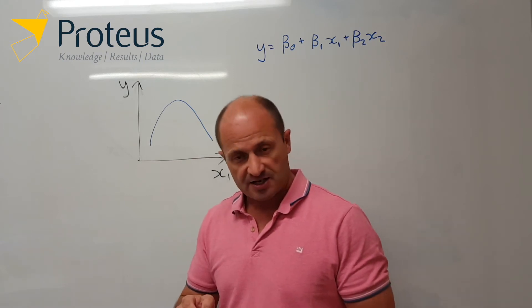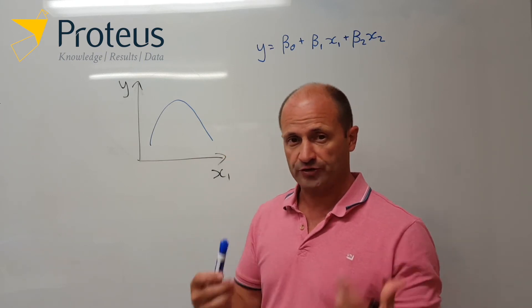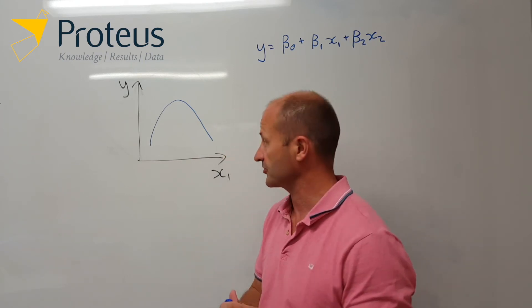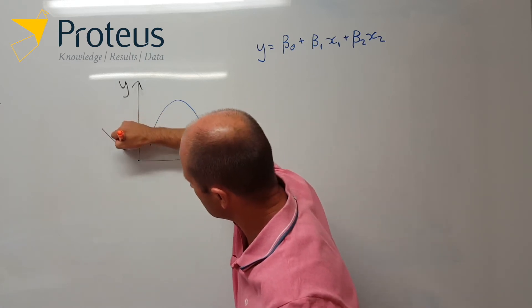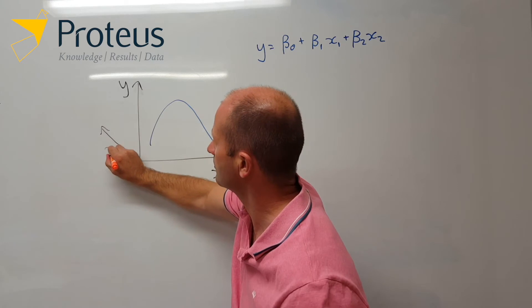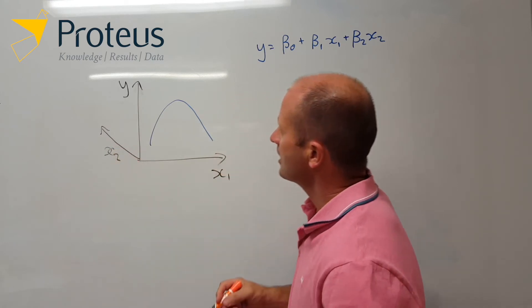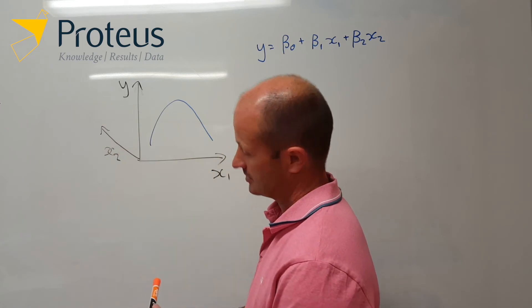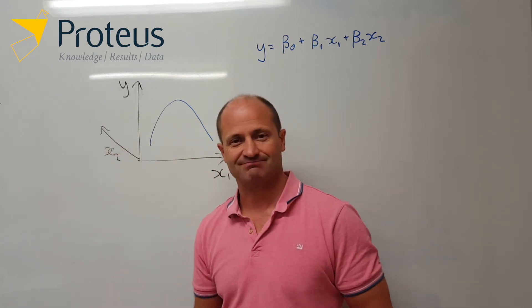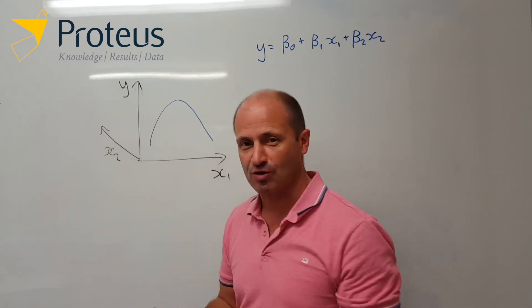Now if we have a second continuous variable, which we also think is important in a similar manner, so perhaps we also have a second variable here, x2, and again we have that sort of quadratic form to that. That's really hard to sketch out in this sort of three-dimensional plot type situation.